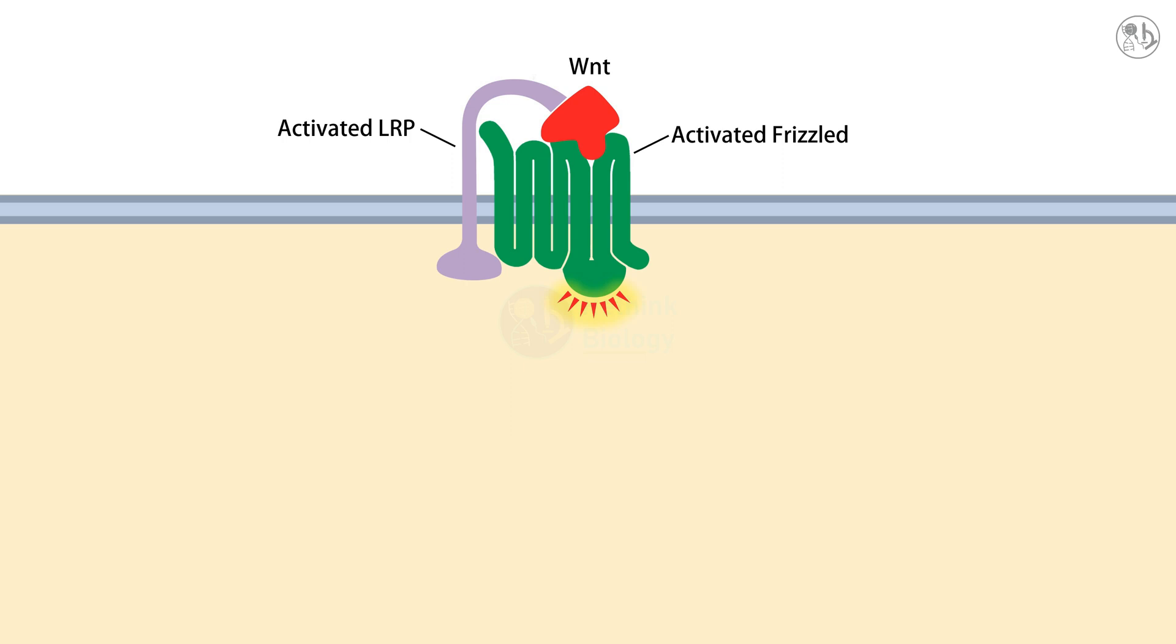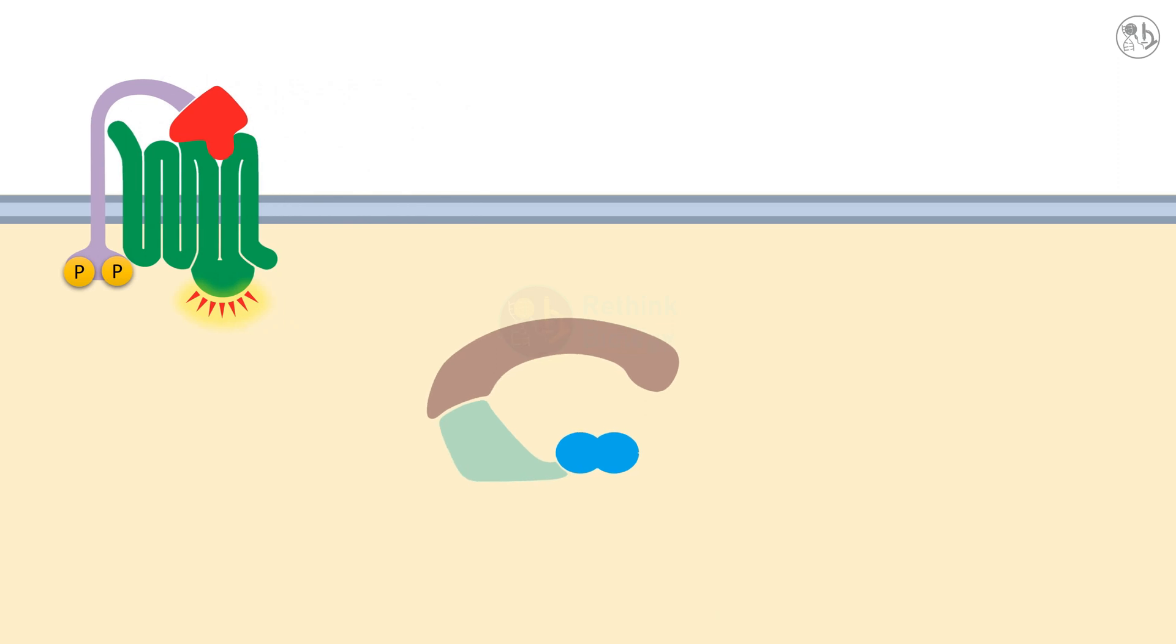First, the cytoplasmic tail of LRP is phosphorylated by GSK3 and CK1, which creates a binding site for axon. Axon is a scaffold protein that normally holds the beta-catenin degradation complex together.